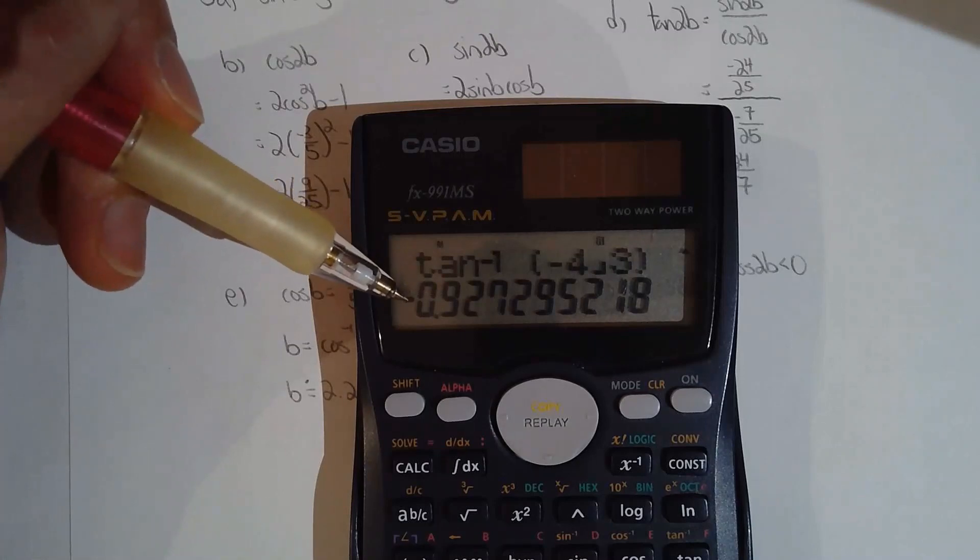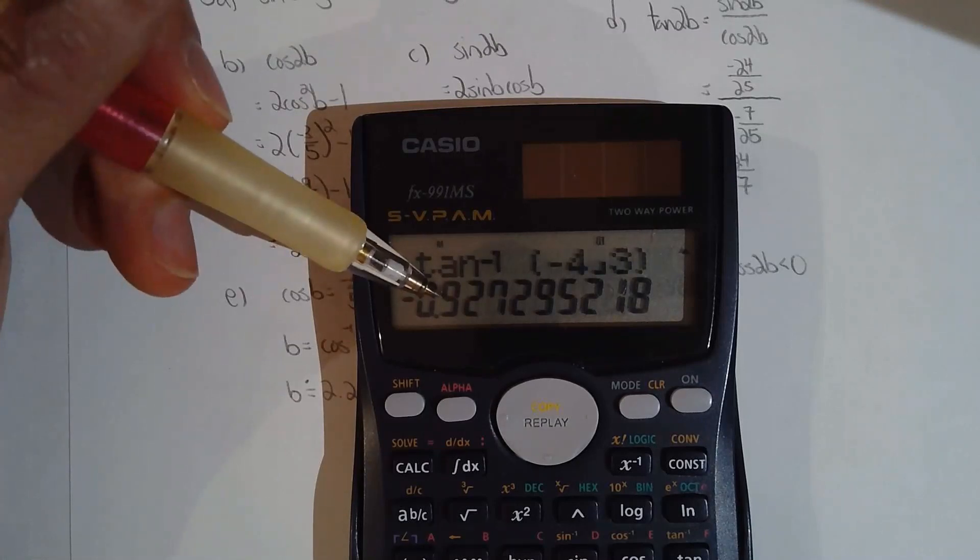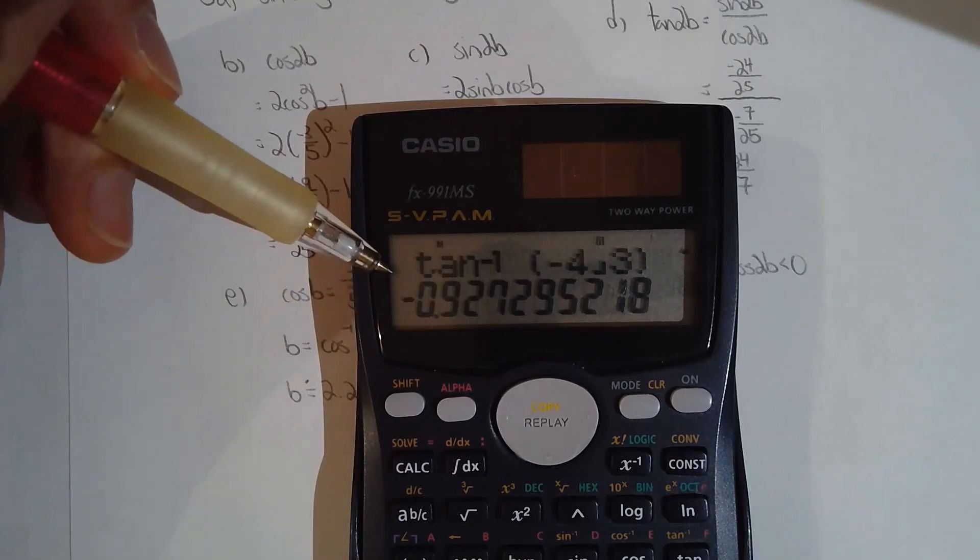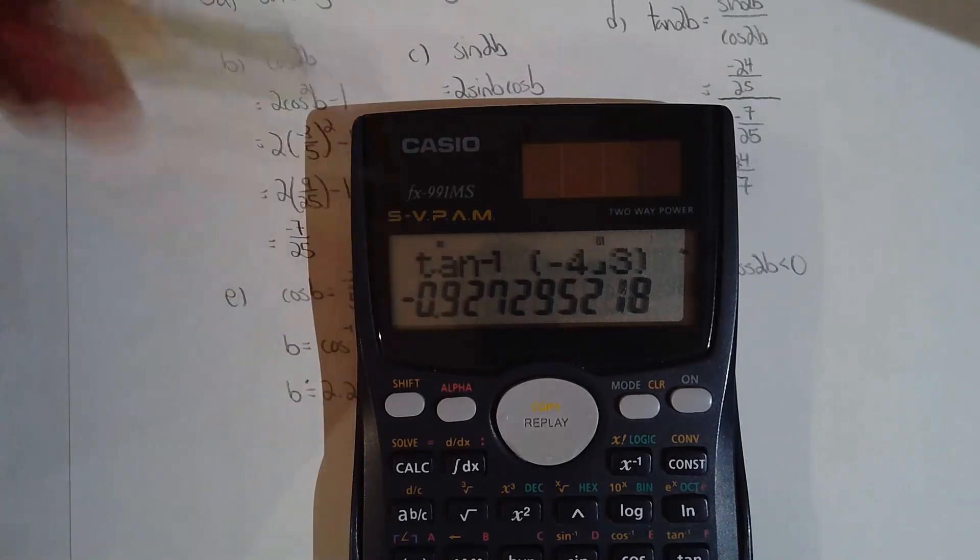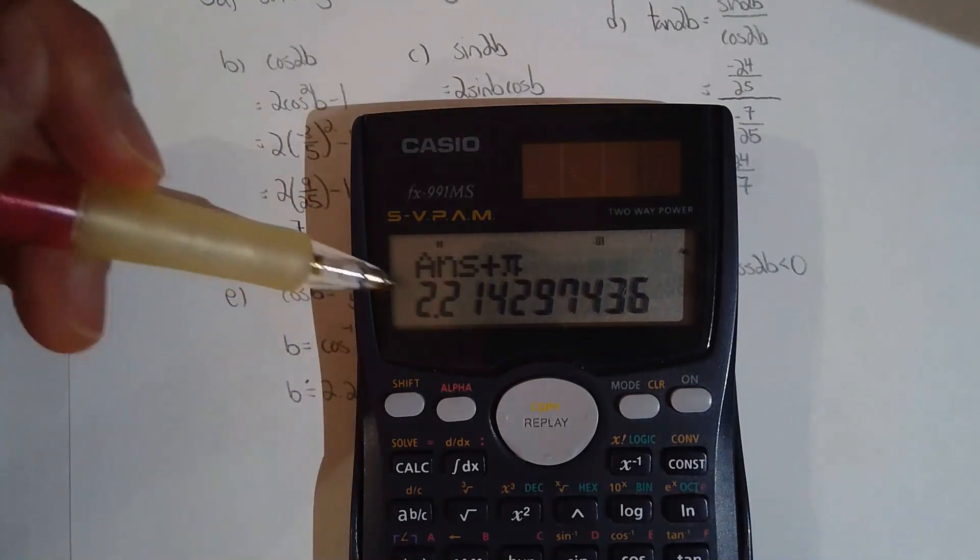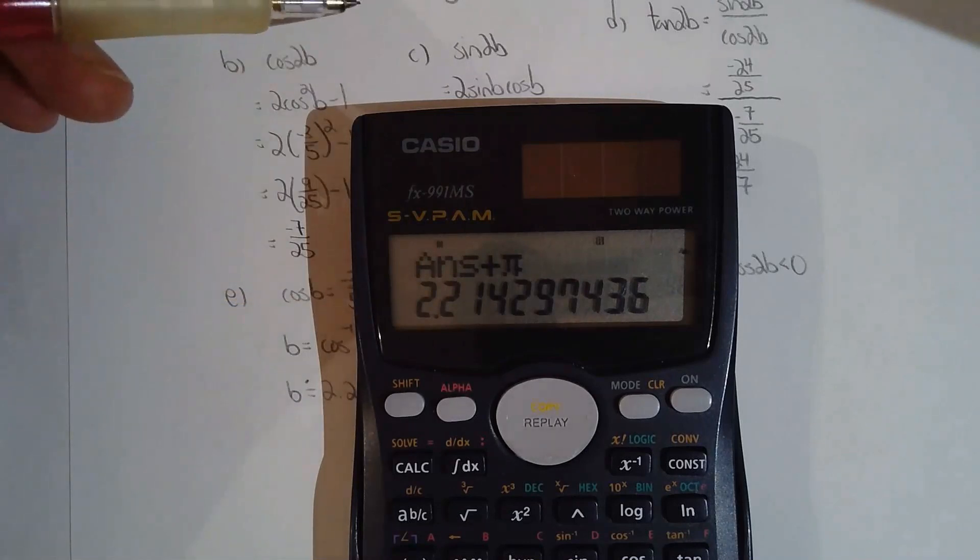Negative point nine two seven is not in the second quadrant. How do I know that? Because a negative angle means I'm rotating clockwise as opposed to counterclockwise. So what I need to do is manipulate this answer. There's a few ways to do it, but I'm going to just add this by pi. There, 2.21. That's my quadrant two answer. Because a quadrant two answer and a quadrant four answer generates a ratio of negative four thirds for tan.